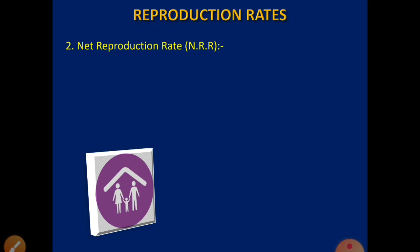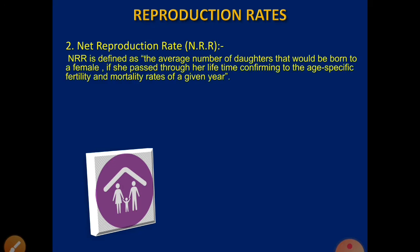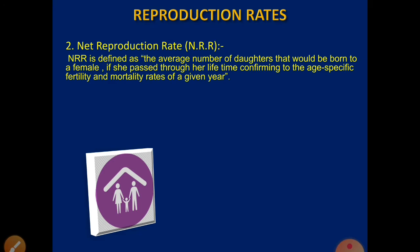In today's class, we are going to study the second measure, that is NRR — Net Reproduction Rate. NRR is defined as the average number of daughters that would be born to a female if she passed through her lifetime conforming to the age-specific fertility and mortality rates of a given year. It is the number of female children surviving till their reproductive ages as one woman passes through childbearing age.